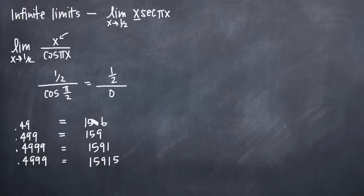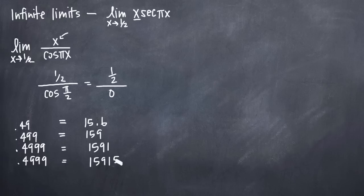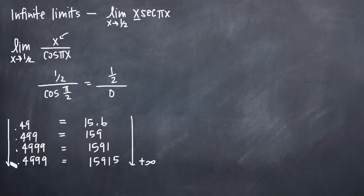What this tells us is that the value of our function is increasing without bound. Because we already know the limit will be infinite — since we identified a vertical asymptote at x equals one-half — we know that the limit as x approaches one-half from the left-hand side will be positive infinity. The trend is clearly moving toward positive infinity as x gets closer and closer to 0.5 from the left.